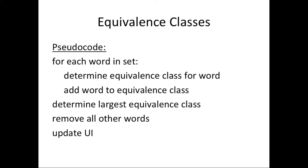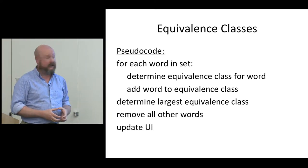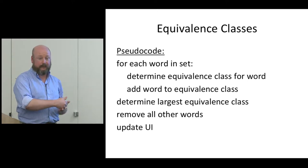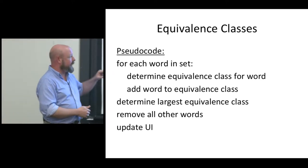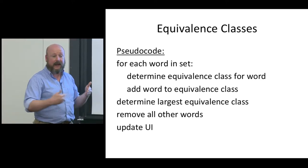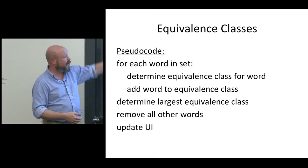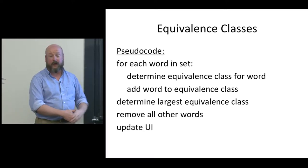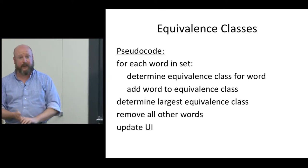If we think about what we're going to do, we can start mapping this out in pseudocode. For each word in the set, we need to determine what the equivalence class is for the word, and then add that word to that equivalence class. So if the word was cat and we guessed T, we've come to the equivalence class dash-dash-T and we add cat to that list. When we get done, we determine the largest equivalence class, remove all other words since they're out of play, and update the user interface.